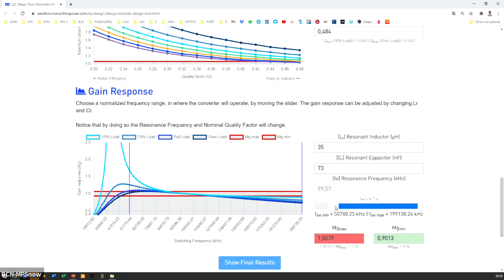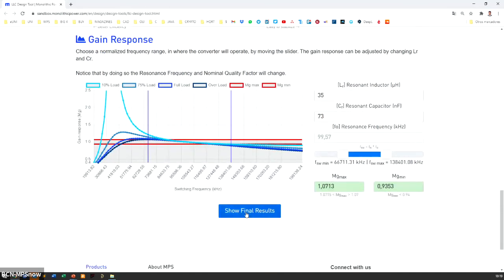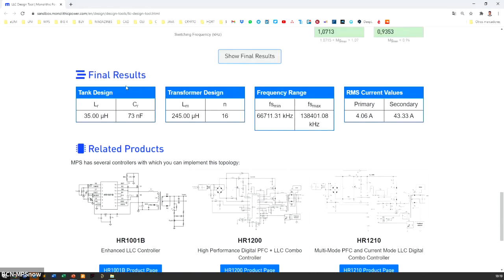Then you can modify the resonant inductor and capacitor values to fit with the normalized ones and observe how this affects the resonant frequency and the gain response. Finally, you can move the slider to select the operating frequency window, but remember that the minimum frequency is defined by the peak gain of the overloaded curve to make sure that the system stays in the inductive region. The maximum frequency can be anywhere above the frequency of the minimum gain required. By pressing this button, you can observe the final results for your converter.